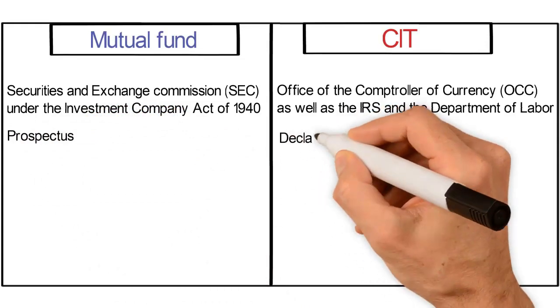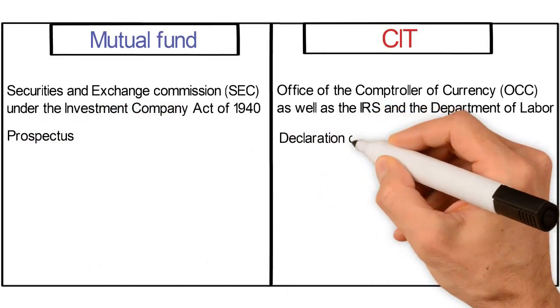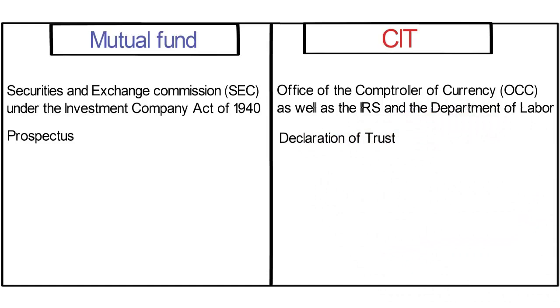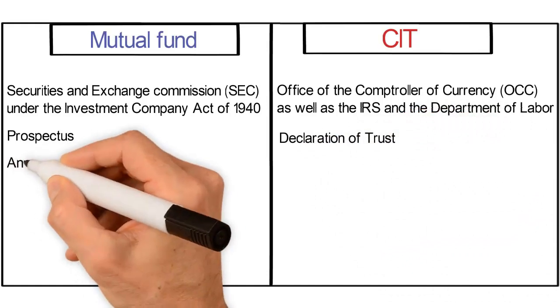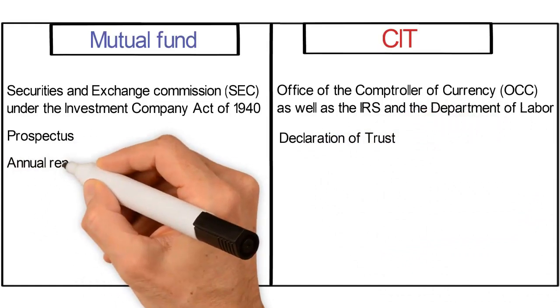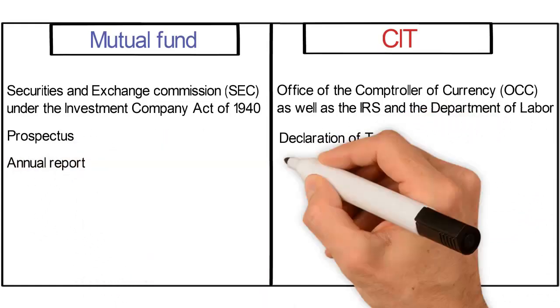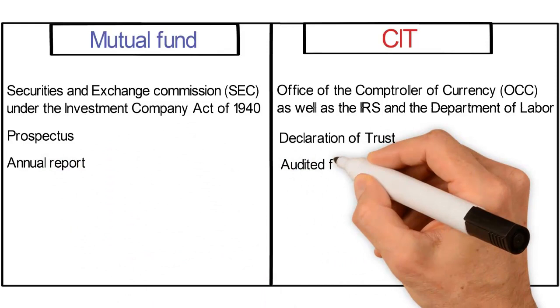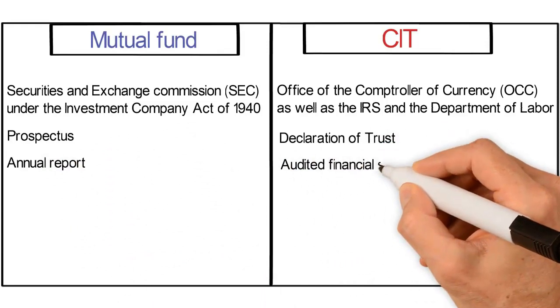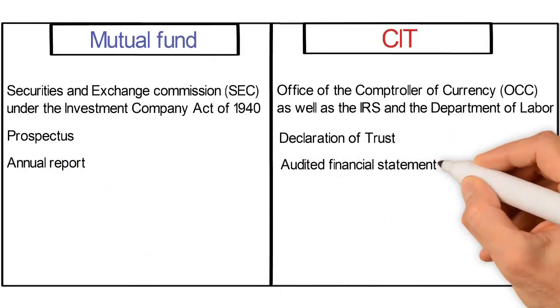The governing document for a mutual fund is the prospectus. The CIT is governed by the Declaration of Trust and has operating guidelines. Mutual funds have an annual report that discloses their reporting, and CITs use audited financial statements.